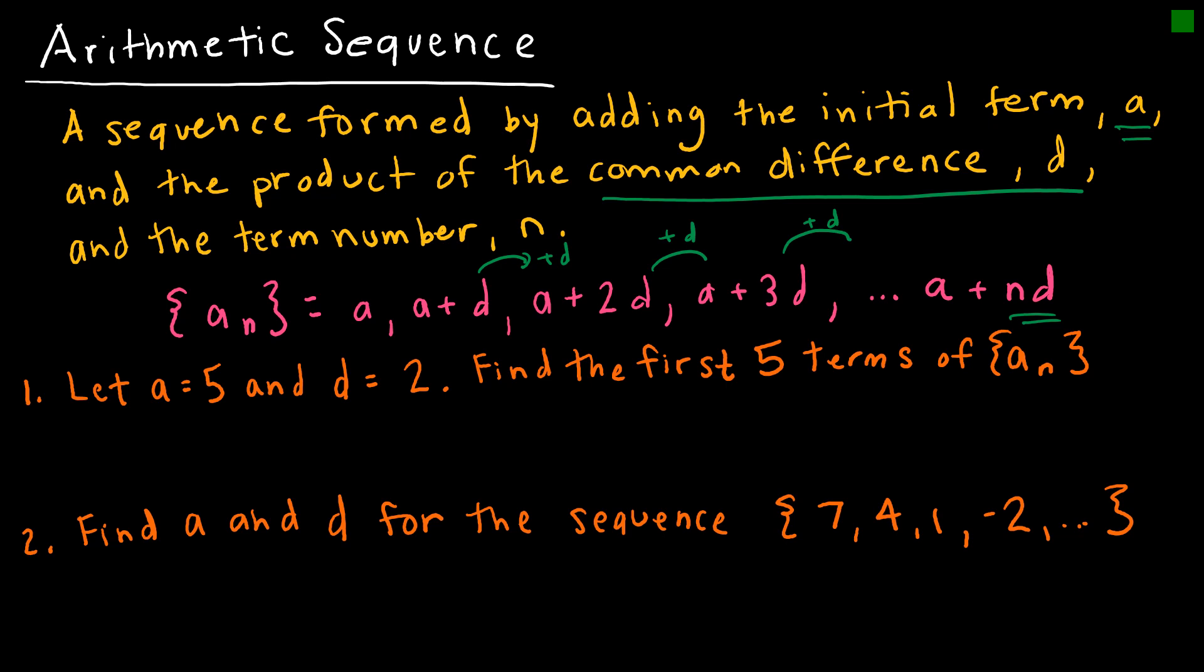Let's take a look at two examples opposites of one another. The first one says let a equal 5 and d equal 2, find the first five terms. So the first term is 5 because they told me it was. To find every subsequent term all I'm going to do is add the common difference of 2. So 5 plus 2 is 7, 7 plus 2 is 9, 9 plus 2 is 11, 11 plus 2 is 13. So the first five terms are 5, 7, 9, 11, 13.